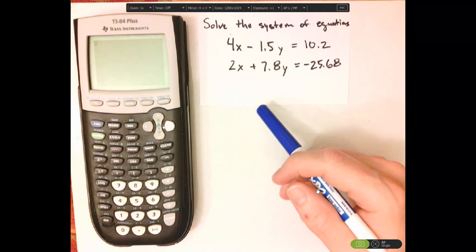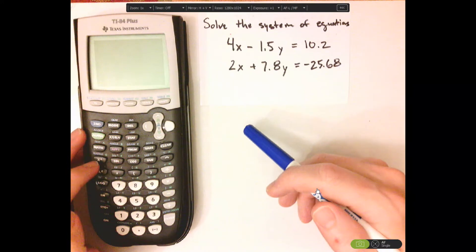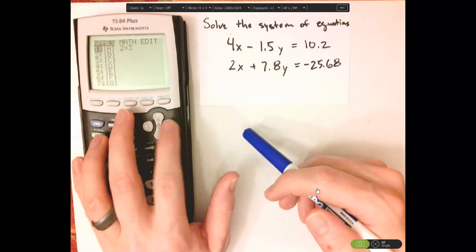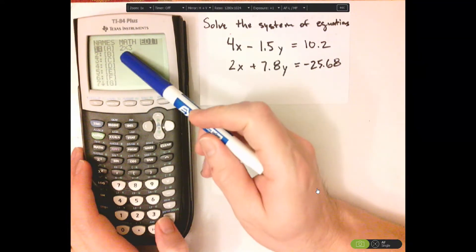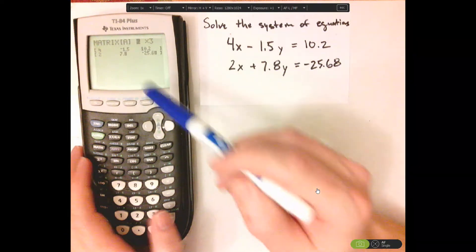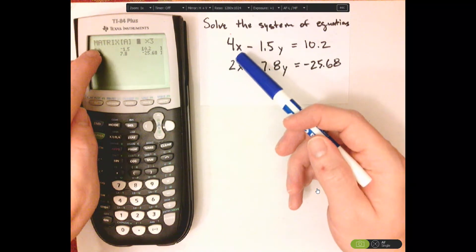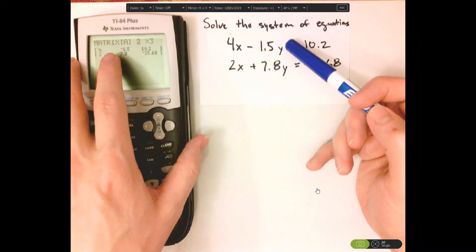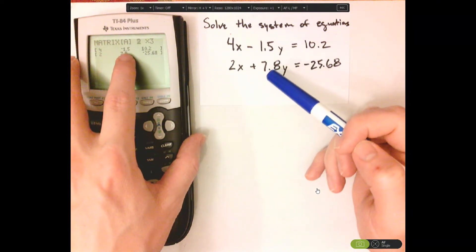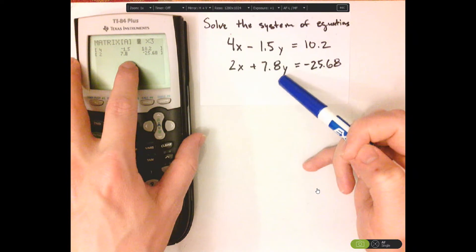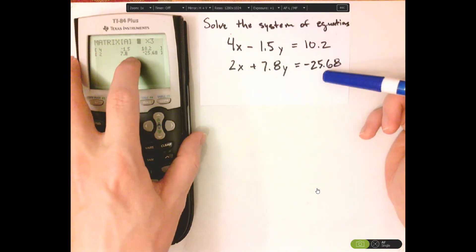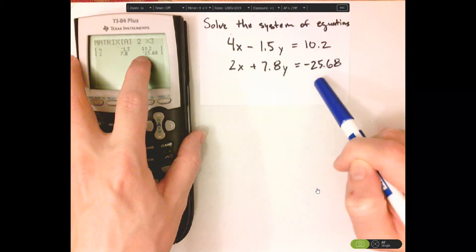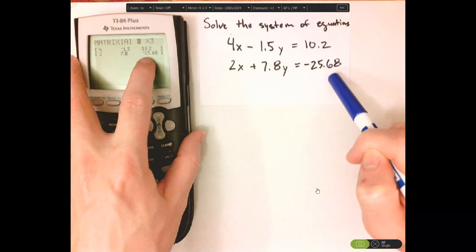The first way is to use matrices. Push 2nd and then matrix. Go to edit and then type in the coefficients. The coefficients for x go in the first column, so 4 and 2. In the second column type the coefficients for y, so negative 1.5 and 7.8. Then your constants — what it's equal to — are 10.2 and negative 25.68.